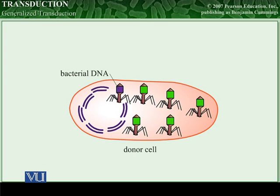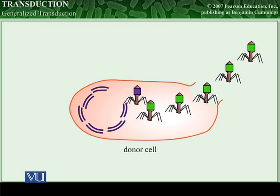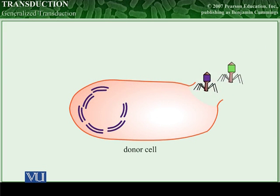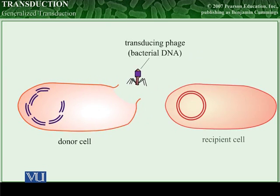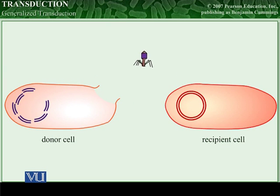Generalized transduction is initiated during the lytic cycle of a temperate bacteriophage, and the donor DNA can be any fragment of the bacterial chromosome. Specialized transduction is initiated during the lysogenic cycle, and the donor DNA is a very specific part of the bacterial chromosome adjacent to the prophage.